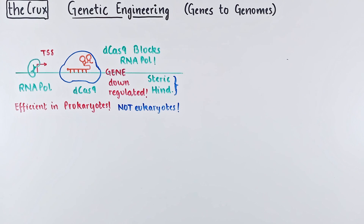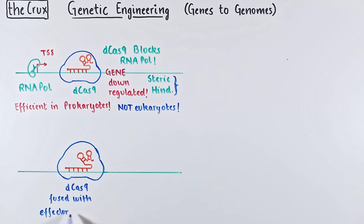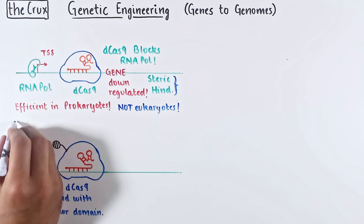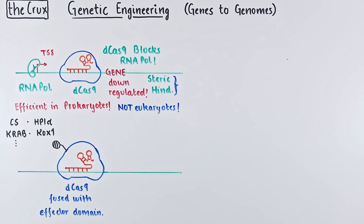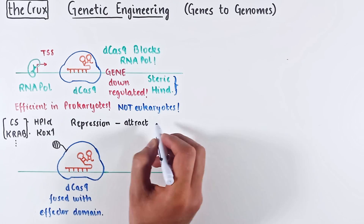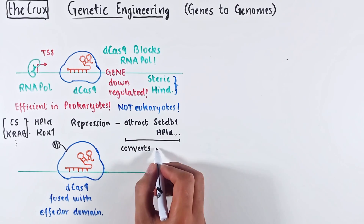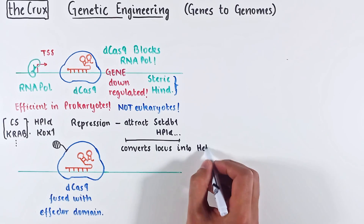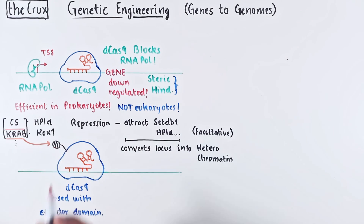dCas9 is not a strong steric hindrance for RNA polymerase 2 in eukaryotes. To overcome this challenge, people have fused effector domains to the C-terminal end of dCas9. The effector domains are functional domains like Chromoshadow from HP1-alpha, or KRAB domain from KZFP, and a bunch of others were tested as well. All these domains are repressive in function, meaning they can recruit proteins like SetDB1, HP1, and others to convert the locus of the gene into a facultative heterochromatin. KRAB works best of all, so it is the most commonly used repressive effector.